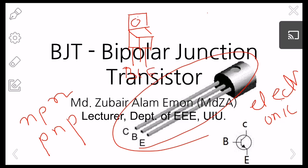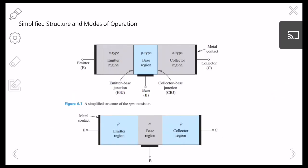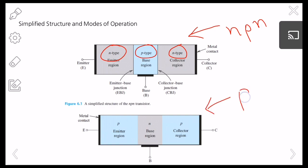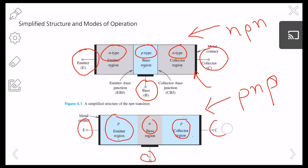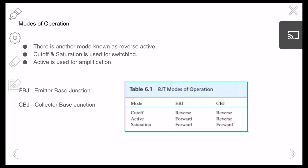This is a simplified structure for BJT. The first one is an NPN BJT and the one below is a PNP BJT. In the NPN, you have the base region, emitter region, and collector region with metal contacts. Similarly for PNP, it's P type, N type, and P type — with collector, base, and emitter, again with metal contacts.